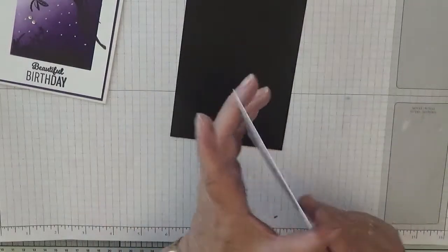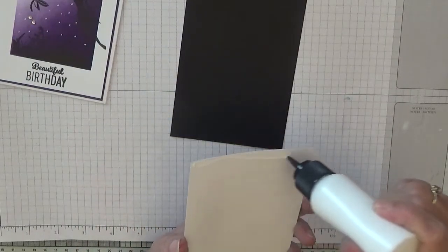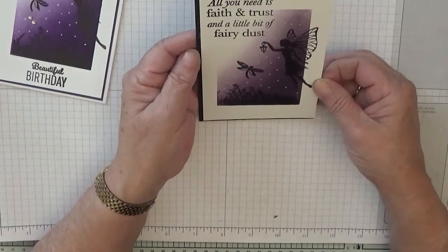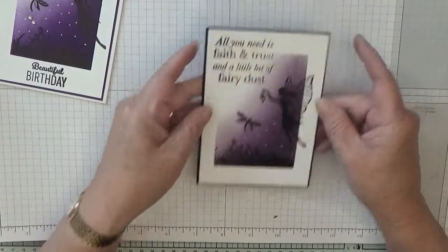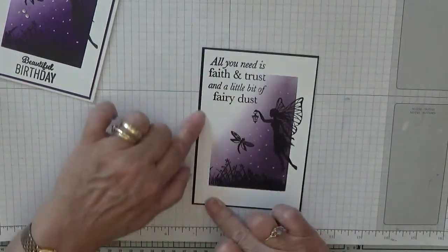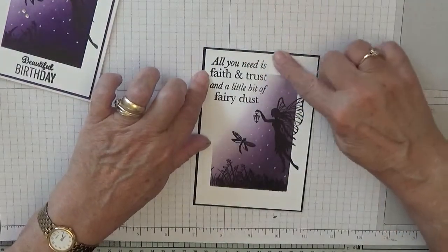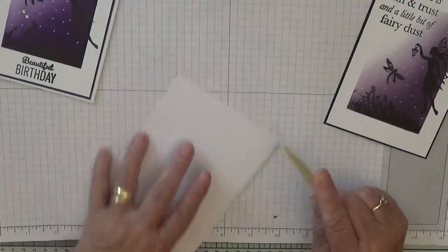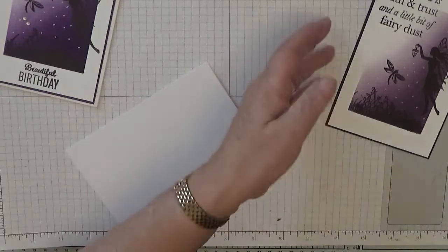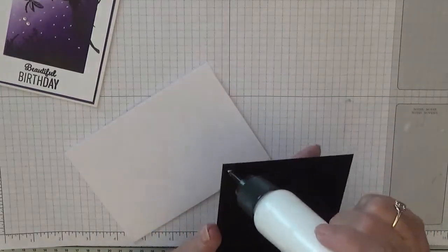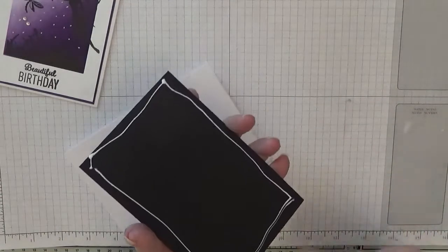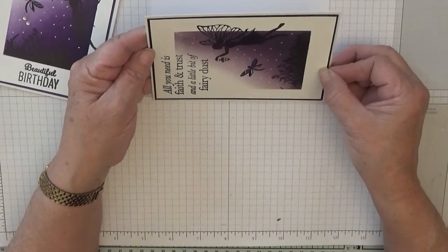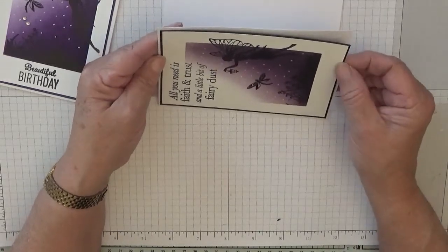And now I'll stick that on the black and then we'll stick this on this card base. I can see it's still wet because it's shining.